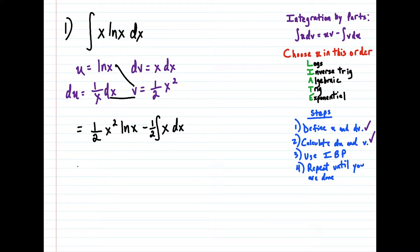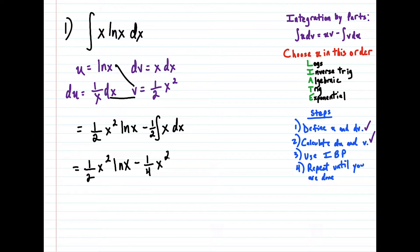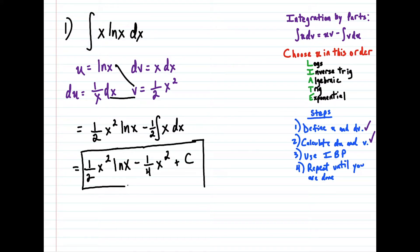Now we tack on the dx term. So our final result: we're just going to rewrite the one half x squared natural log x, and the antiderivative of x is x squared divided by two. So we'll have minus one half times one half x squared, which gives us minus one fourth x squared, and then we just tack on plus c. If you want to check your answer, you could just take the derivative of our antiderivative here and it should bring us right back to the beginning. But this is our final answer to the first question.